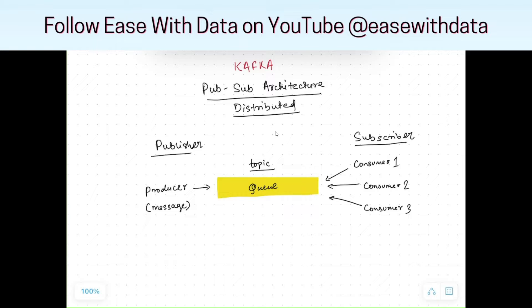When we talk about a messaging queue, understand it like this: we will have a publisher, we will publish some messages, and we will have some subscribers who will subscribe to this message to consume it. In Kafka terminology, the one who produces the messages is known as a producer and the one who consumes a message is called a consumer.